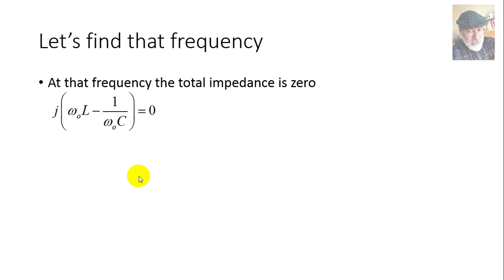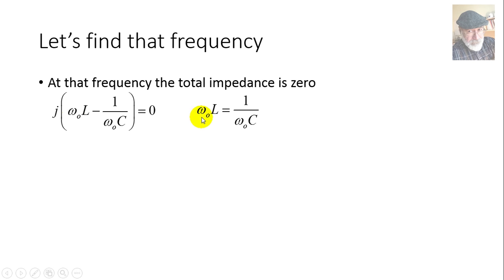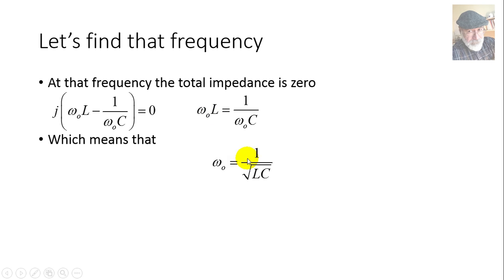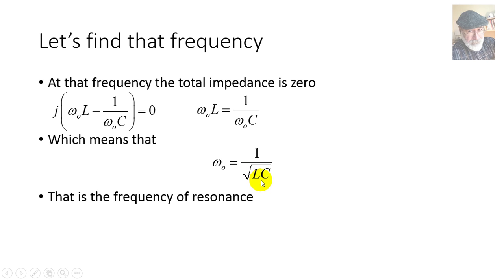What frequency is that? Setting jωL - j1/ωC equal to zero and solving, we find ω₀ = 1/√(LC). That is called the frequency of resonance, or the resonant frequency.